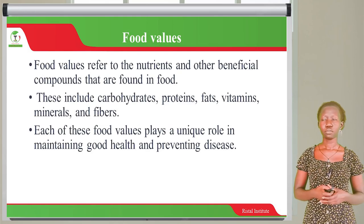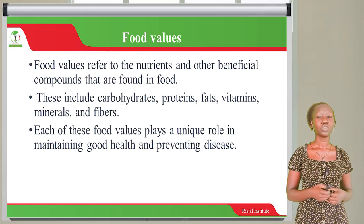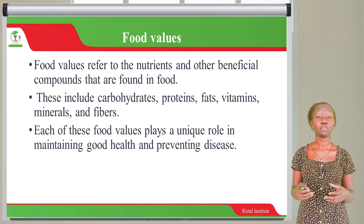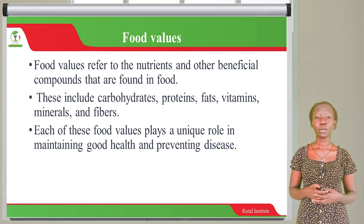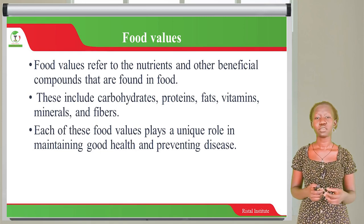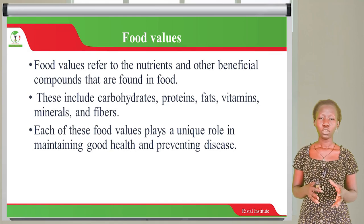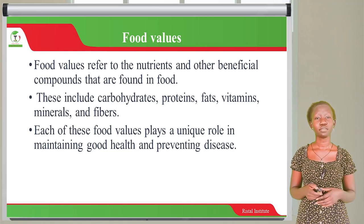Food values. What are food values? Food values refer to the nutrients and other beneficial compounds found in food — the carbohydrates, proteins, fats, vitamins, minerals and fiber that I've been talking about. Each of these food values plays a unique role in maintaining good health and preventing disease.